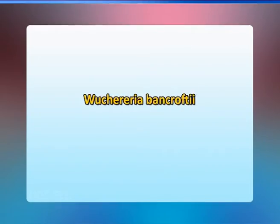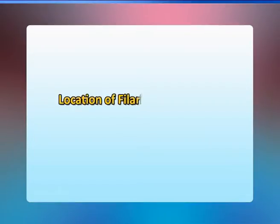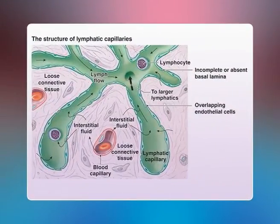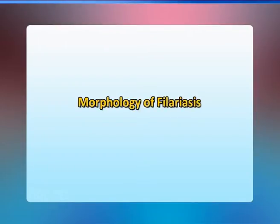Wuchereria bancrofti, also known as Filaria sanguinis hominis, Filaria bancrofti, or Wuchereria pacifica, causes Bancroftian filariasis and elephantiasis. Its location in the host: the adult worms live in the lymphatics or lymph nodes of the lower limbs and groins or upper limbs. Sheathed microfilariae are found in the blood.